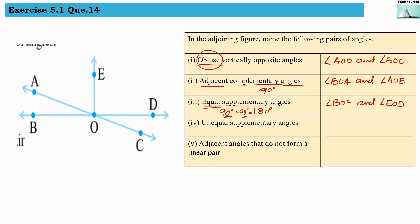Fourth, we have to find out unequal supplementary angles. Supplementary angles means the measure of two angles sum will be 180 degrees, and they should be unequal. Angle AOE and angle EOC, they both are a pair of supplementary angles as well as they are unequal.